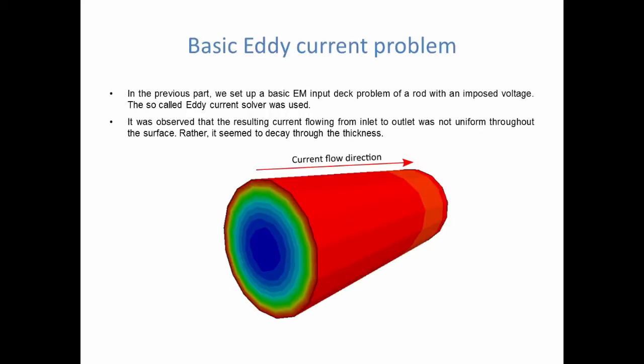In the previous video we introduced some of the main keywords needed to set up an input deck. It was a conductor that was connected to a circuit, in this case an imposed voltage, and then the imposed voltage was generating current. One thing which was observed was that the resulting current flowing from inlet to outlet was not uniform across the surface. Rather it seemed to decay through the thickness with lower values at the center.